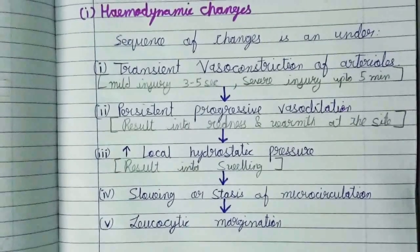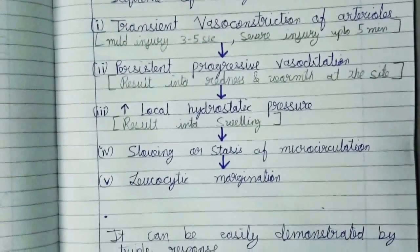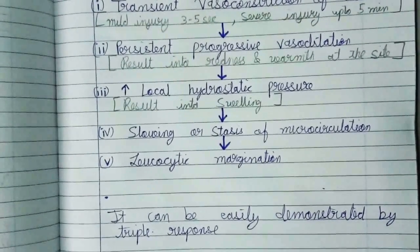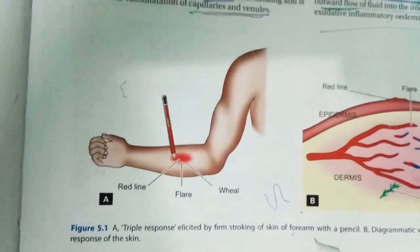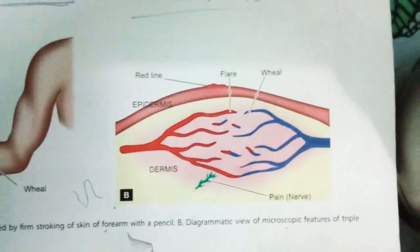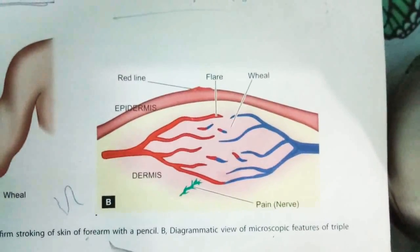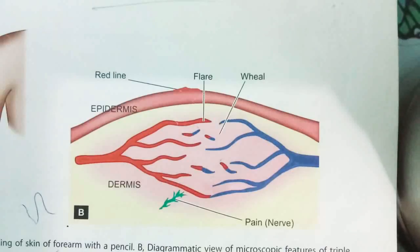These hemodynamic changes can be studied through the triple response. The triple response is explained by the Lewis experiment. Lewis induced changes in the skin of the forearm by firm stroking with a blunt point.